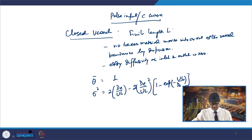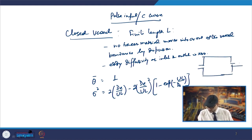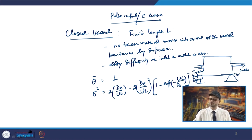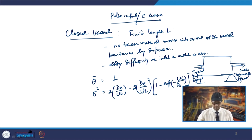The closed vessel is characterized by tracer entering at the inlet and exiting at the outlet, with the tracer output signal measured there. In this case the mean dimensionless residence time θ̄ must equal unity.